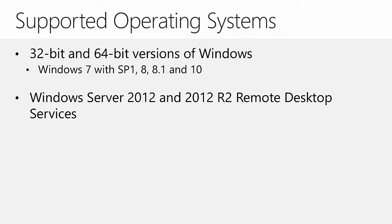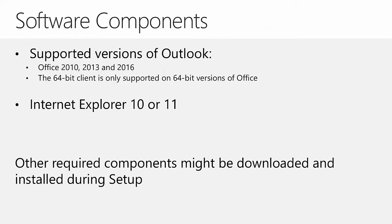The supported operating systems for Dynamics 365 for Outlook include 32-bit and 64-bit versions of Windows 7 with Service Pack 1, Windows 8, Windows 8.1, and Windows 10. Windows Server 2012 and Server 2012 R2 are also supported for remote desktop services. Supported versions of Outlook include those in Office 2010, Office 2013, and Office 2016. Note that the 64-bit client of Dynamics 365 for Outlook is only supported on the 64-bit version of Office; for 32-bit versions of Office, the 32-bit client must be installed. The architecture of the operating system is not relevant. Internet Explorer 10 or 11 is required, and other required components might be downloaded and installed during setup.